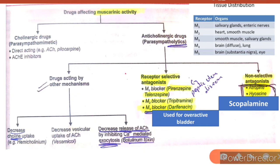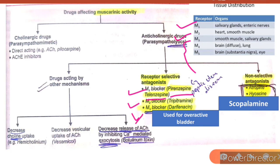The next group is receptor-selective antagonists. A mnemonic for receptor locations: M1 is present in the GIT, M2 is present on the heart, and M3, M4, M5 are present in the rest of the body. M1 blockers — pirenzepine and telenzepine — act mainly on the GIT and are used in peptic ulcer disease. M2 blockers acting on the heart include tripitramine.